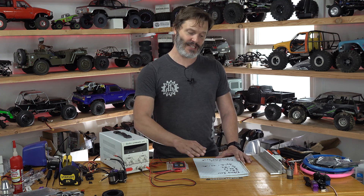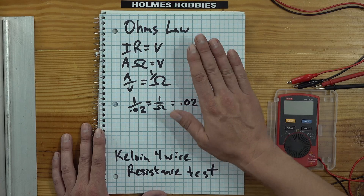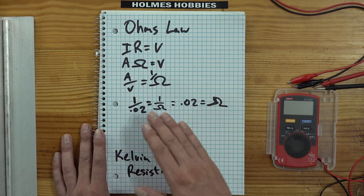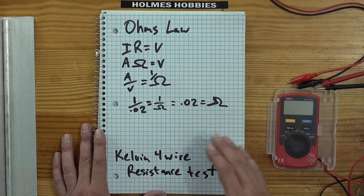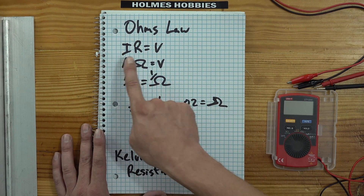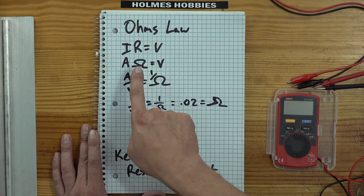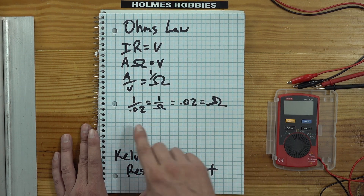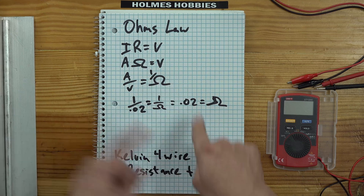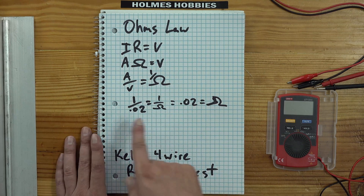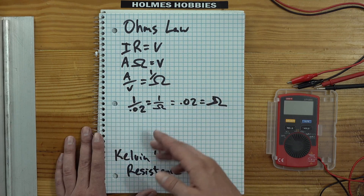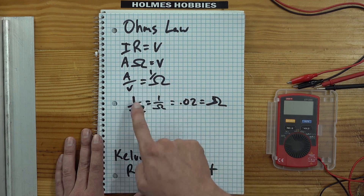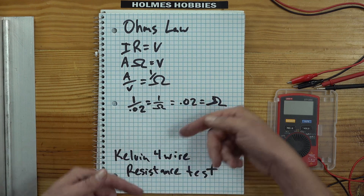So the basis of it is that we would use Ohm's law. Amps times Ohms equals Volts. We have it listed a few ways here — Amps, Ohms, Volts, I·R·V. Then we flip the equation around to get what we want. In this case we're looking for the resistance, so it would be Amps over Volts equals one over Ohms.